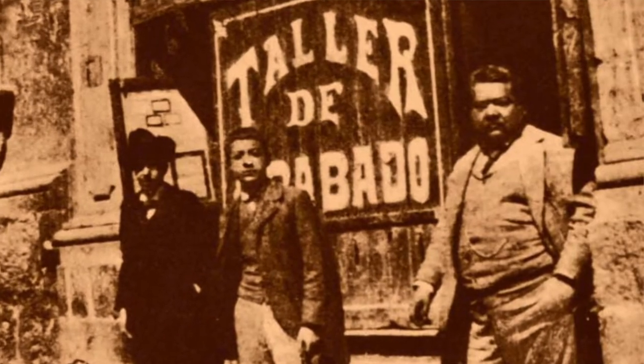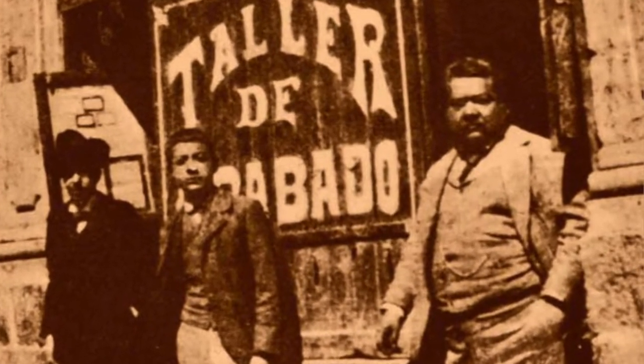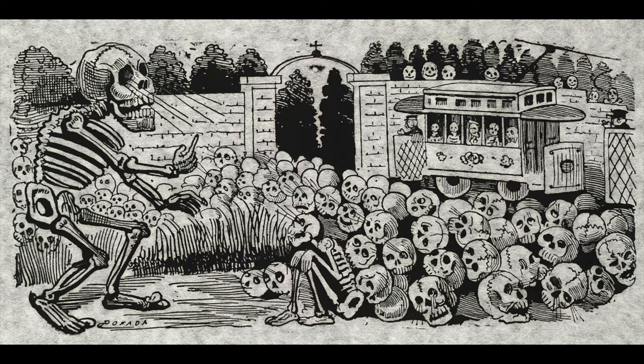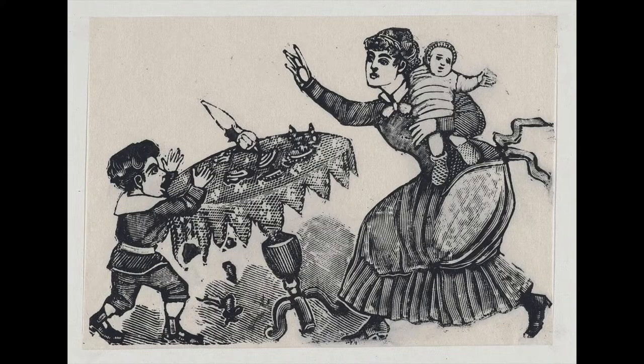A little bit of history on Jose Guadalupe Posada: he was born in 1852 and died in 1913 in Aguascalientes, Mexico. He was a lithographer, which is printing made from a stone or a metal plate. He was 19 years old when he started working for a newspaper titled El Jicote.